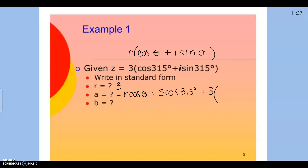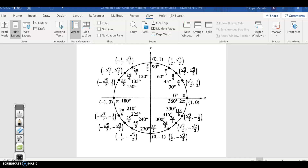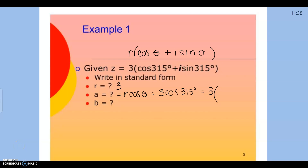Here's the catch: cosine of 315. If I don't have a calculator, the only way is to go to the unit circle, and we need to remember that cosine is your x coordinate. So at 315 degrees, the x coordinate is square root of 2 over 2. We substitute that in and multiply to get three square roots of 2 over 2, and that is our A.